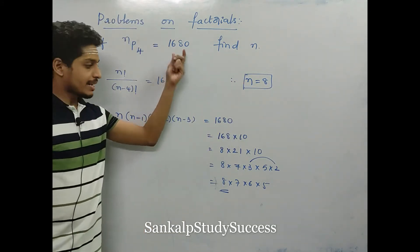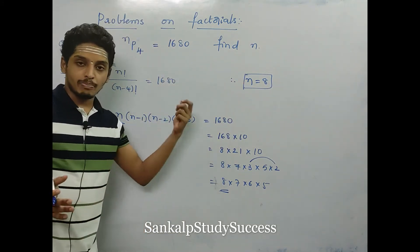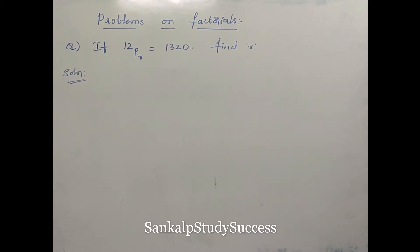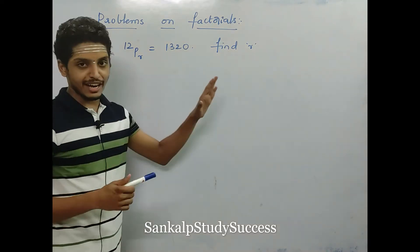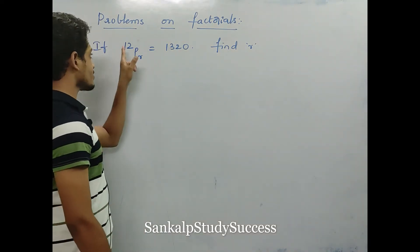So the value of n is nothing but 8. This is the way to approach. Please note it. Let us see the next one. Friends, look at the next question: if 12PR equals 1320, find r.